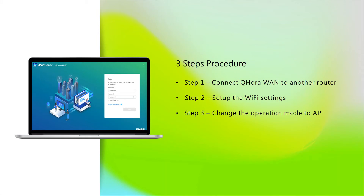The setup process is quite easy — there are only three steps. Step one: connect the QHORA WAN port with a wired connection to the router in front of it. Step two: on the QHORA, set up the Wi-Fi settings for the connection. Step three: on the QHORA GUI, go to System, then Operation Mode, and set the QHORA to AP mode.